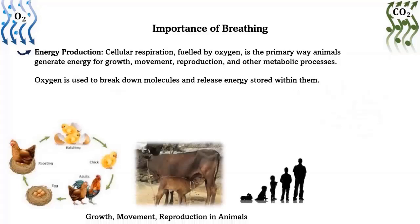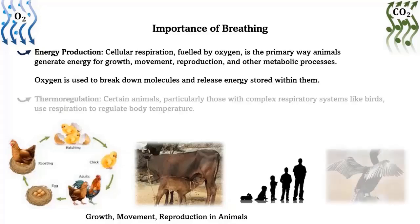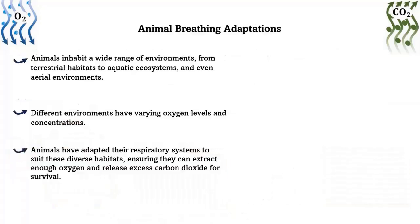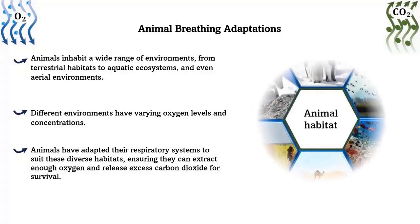Energy production: cellular respiration, fueled by oxygen, is the primary way animals generate energy for growth, movement, heat production, and other metabolic processes. Oxygen is used to break down molecules and release energy stored within them. Thermoregulation: certain animals, particularly those with complex respiratory systems like birds, use respiration to regulate body temperature.